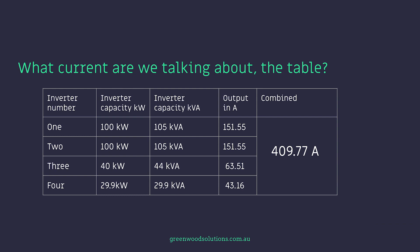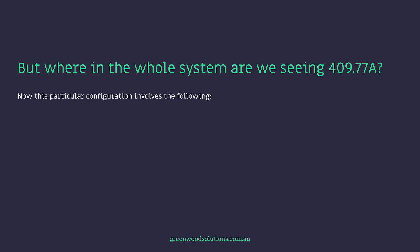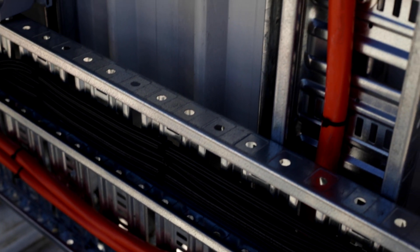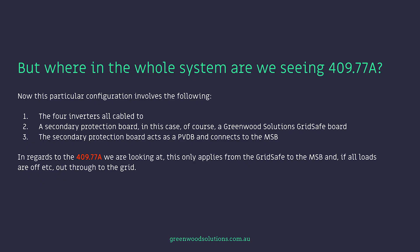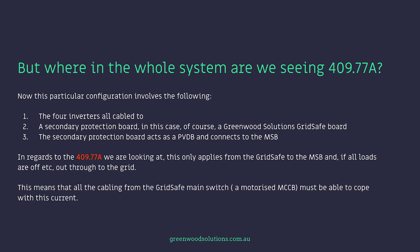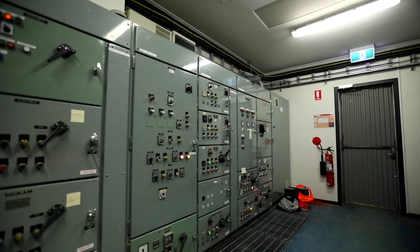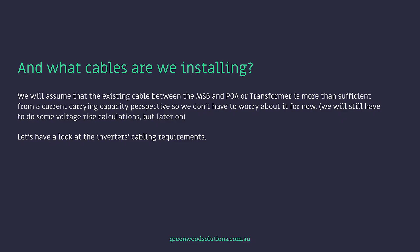Here are the results in a table — inverter one at 100kW/105kVA, inverter two, three, and four — combined total of 409.77 amps. But where in the whole system are we seeing 409.77 amps? This particular configuration has the four inverters all cabled to a secondary protection board — a Greenwood Solutions grid safe board. The secondary protection board acts as a PVDB and connects to the main switchboard. The 409.77 amps only applies from the grid safe to the MSB and if all loads are off, out through to the grid. We will assume the existing cable between the MSB and the transformer is more than sufficient from a current carrying capacity perspective, though we will still have to do some volt rise calculations later.